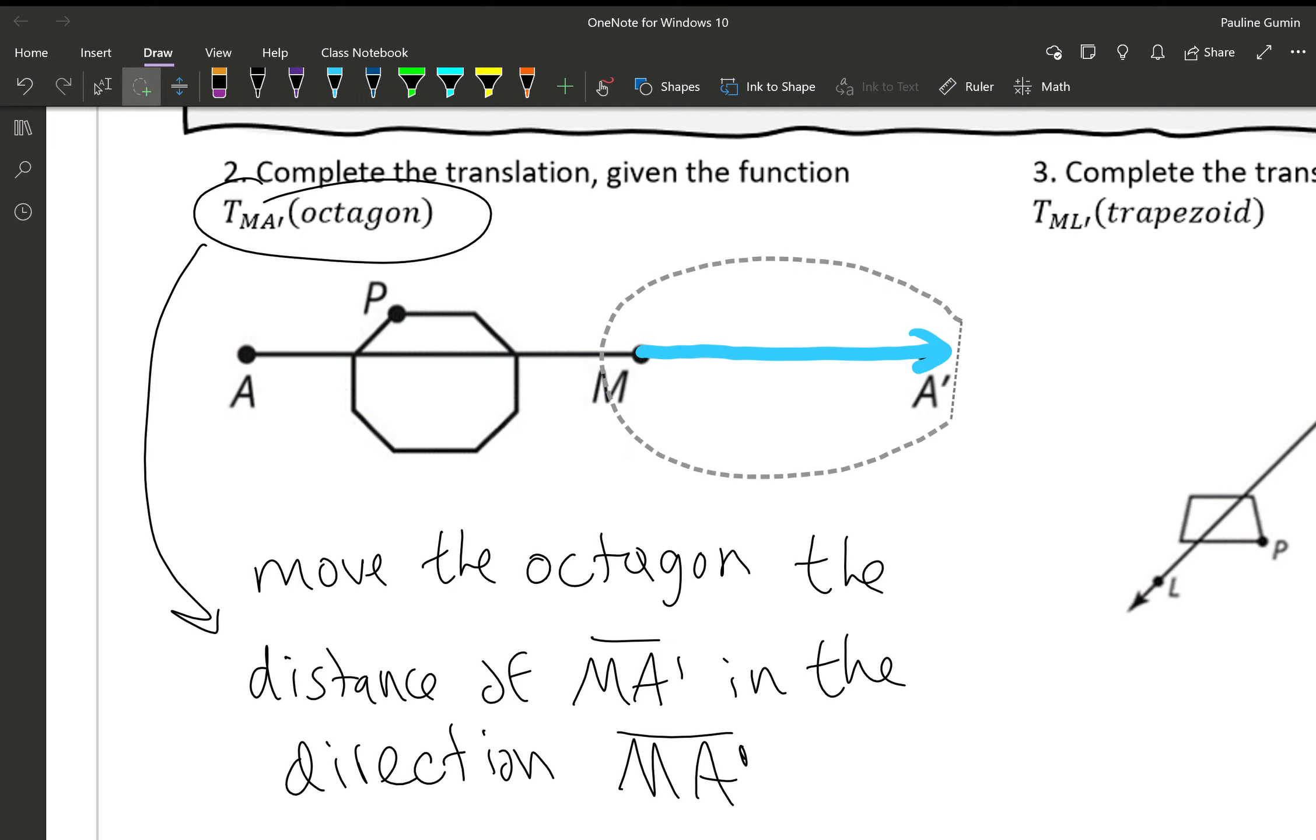We're going to draw that same segment in that same direction starting at point P. Now I have the magic of computers so I get to do that. So I am signifying with this blue arrow that the distance MA prime is being the same distance from P. So right here we have the new point. This is P prime. And then we're going to do our best to draw an octagon of the same size. Obviously I'm not an artist. So if it's close enough then it's close enough.